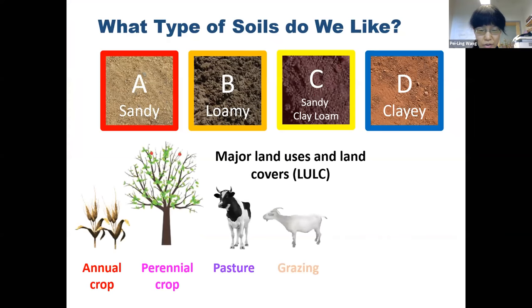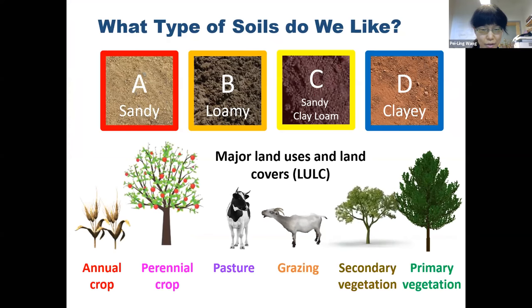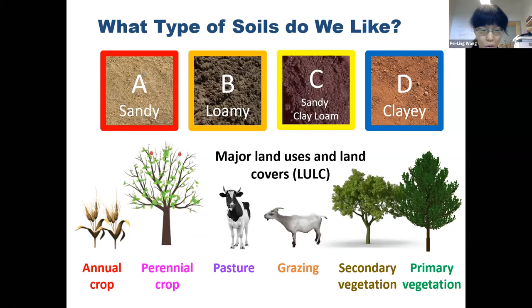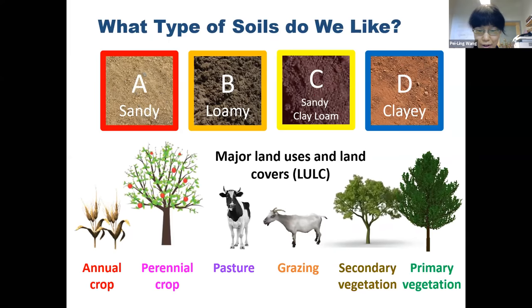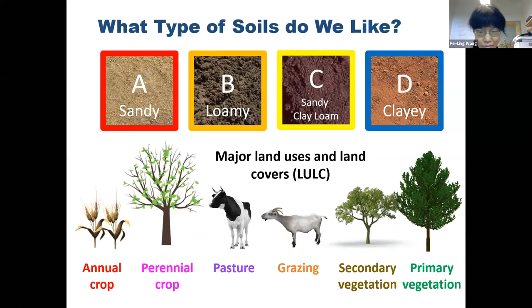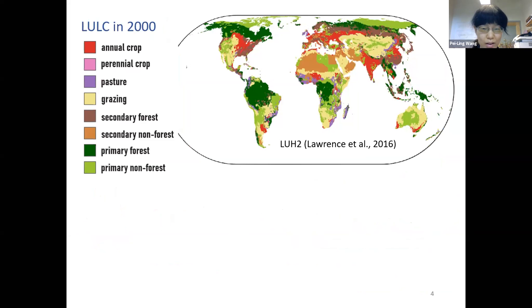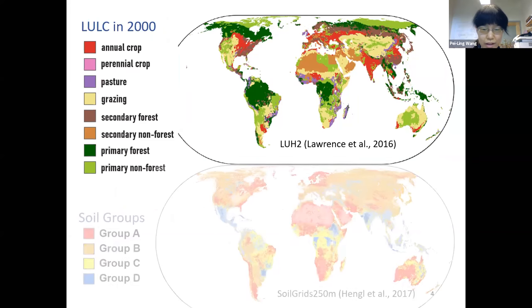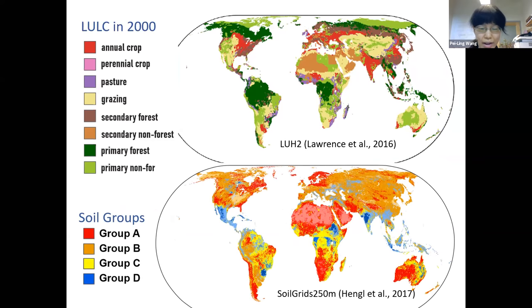We look at the major land uses and land covers, and we rank those land use and land cover types by their importance to human beings. The most important land use is cropland, then pasture land, grazing, secondary vegetation, and primary vegetation. The next step, we overlaid those land use and land covers globally with the distribution of different types of soil groups, then counted what portion of each land use is located in each soil group.